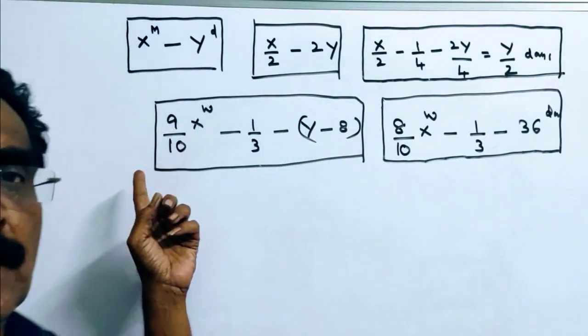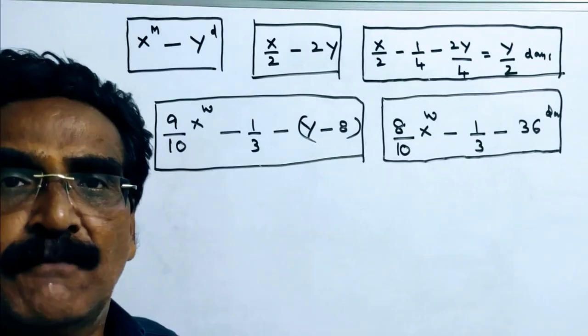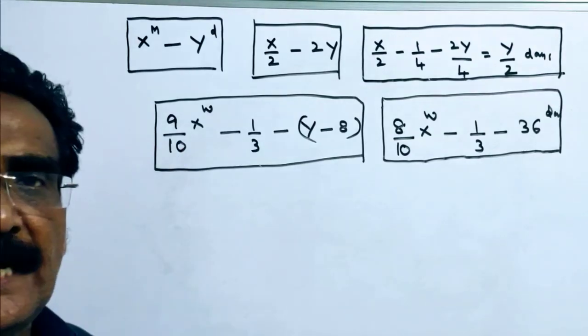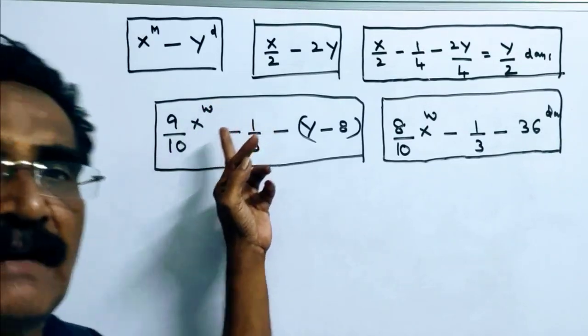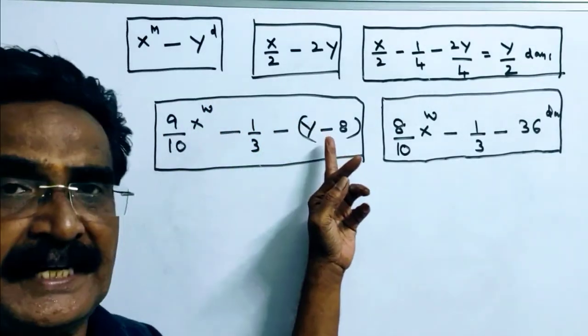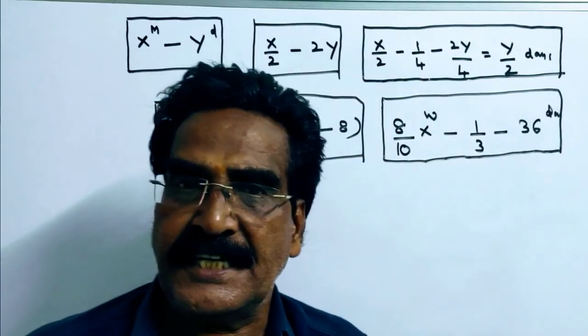The first statement is 0.9 X women. 0.9 means 9 by 10. 9 by 10 X women can complete 1 by 3 work in Y minus 8 days.